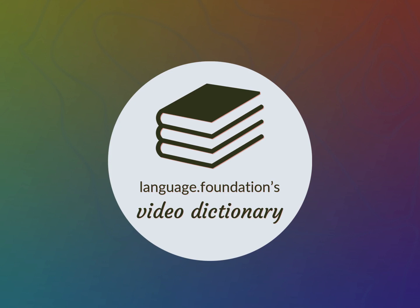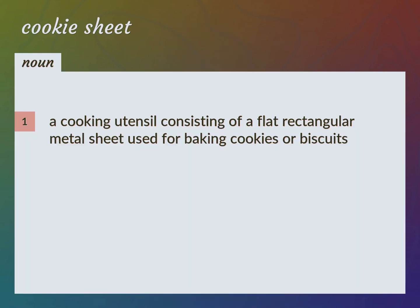Language.Foundation's Video Dictionary, helping you achieve understanding. A cooking utensil consisting of a flat rectangular metal sheet used for baking cookies or biscuits. Baking tray.